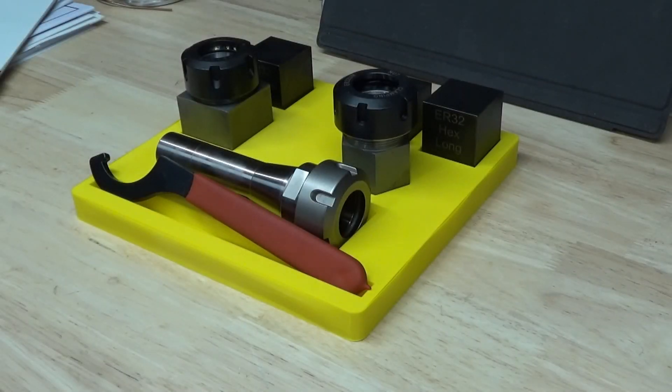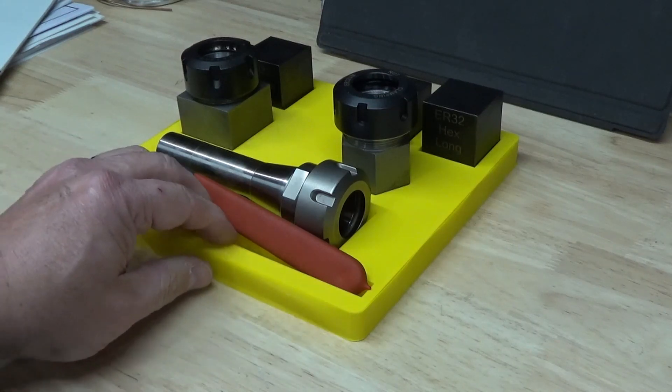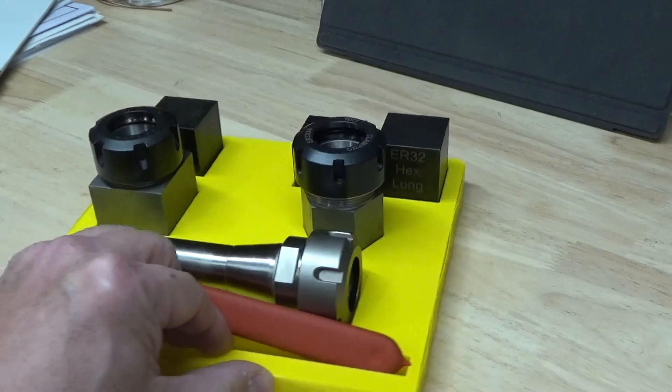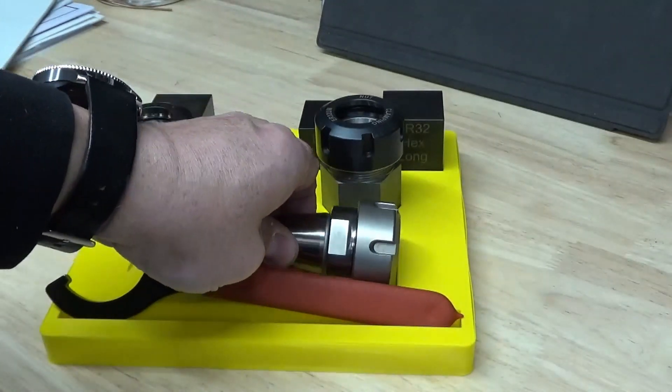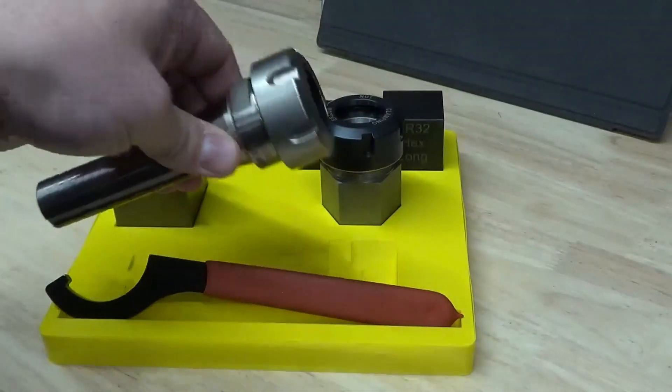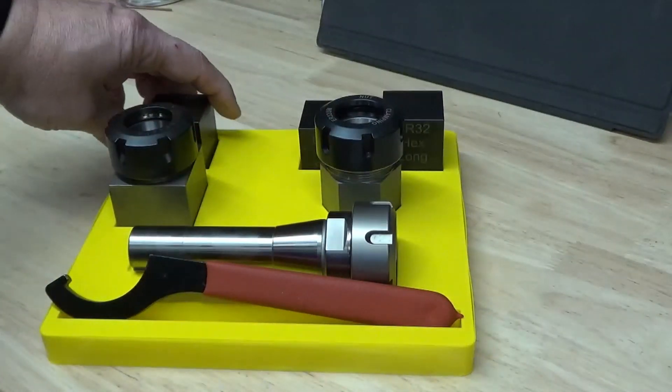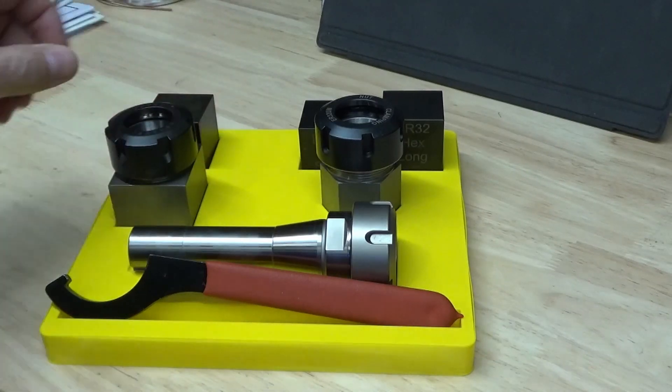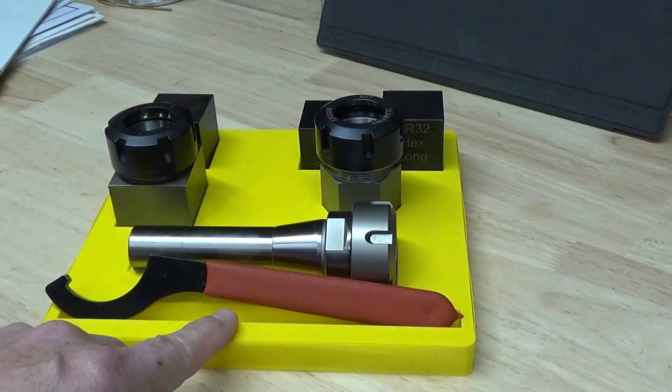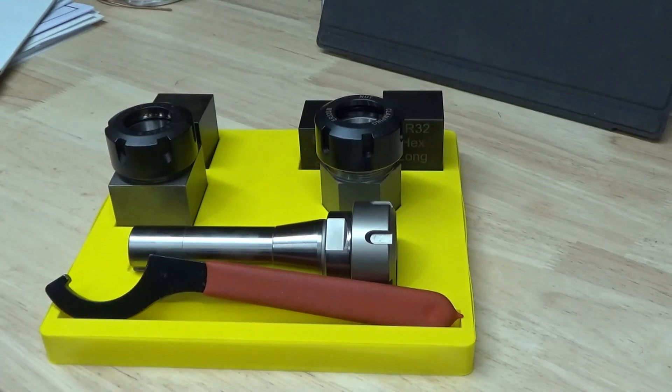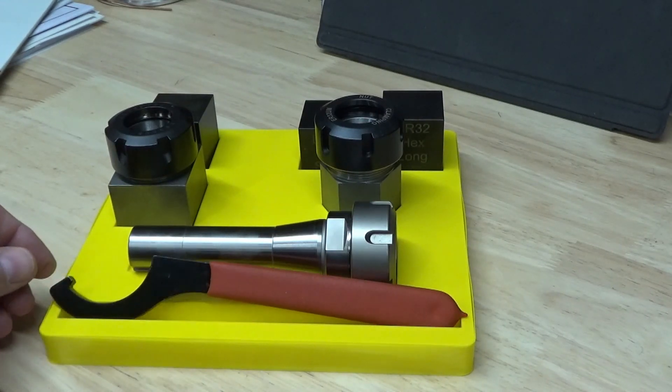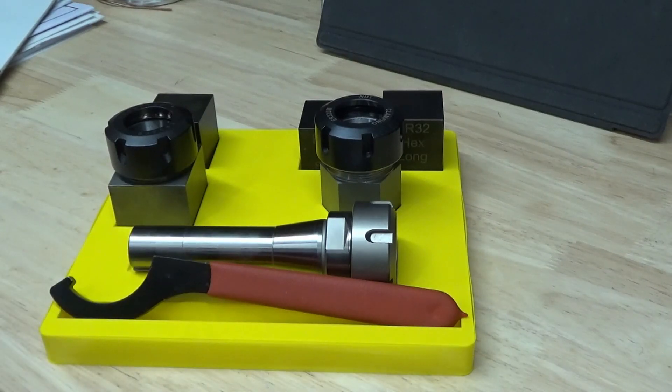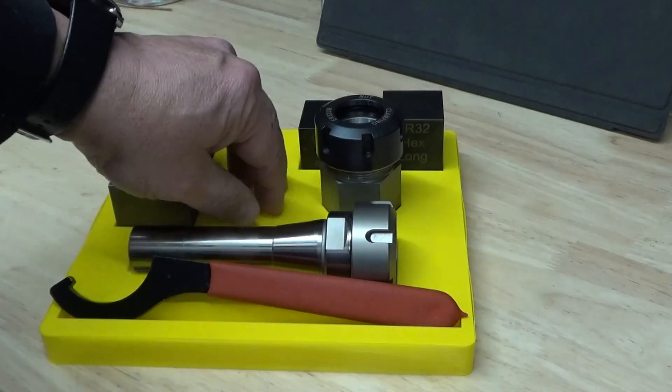So here's the finished ER-32 collet set, collet block set with the vise blocks and the R8 collet adapter. 3D print didn't quite turn out the way I wanted. I have to fine tune it a little bit. But I was pleased that everything fit the first time. So I might adjust it a little bit. It leaves quite a bit of wasted space.